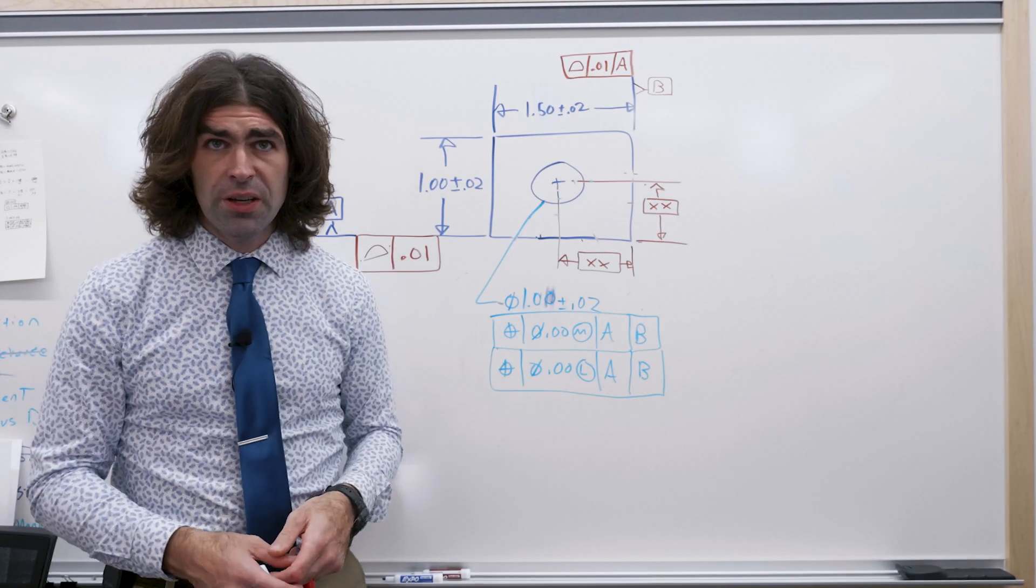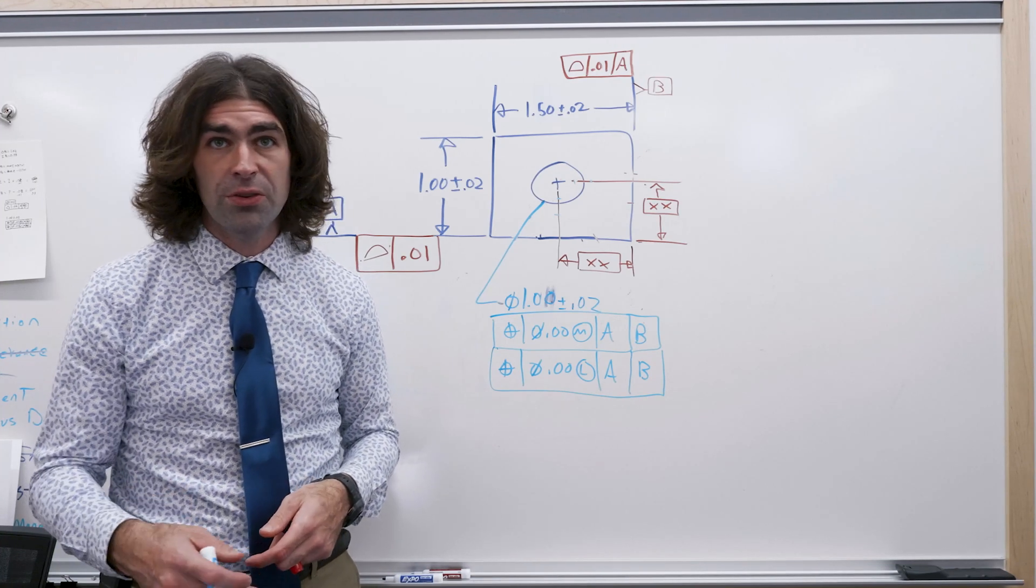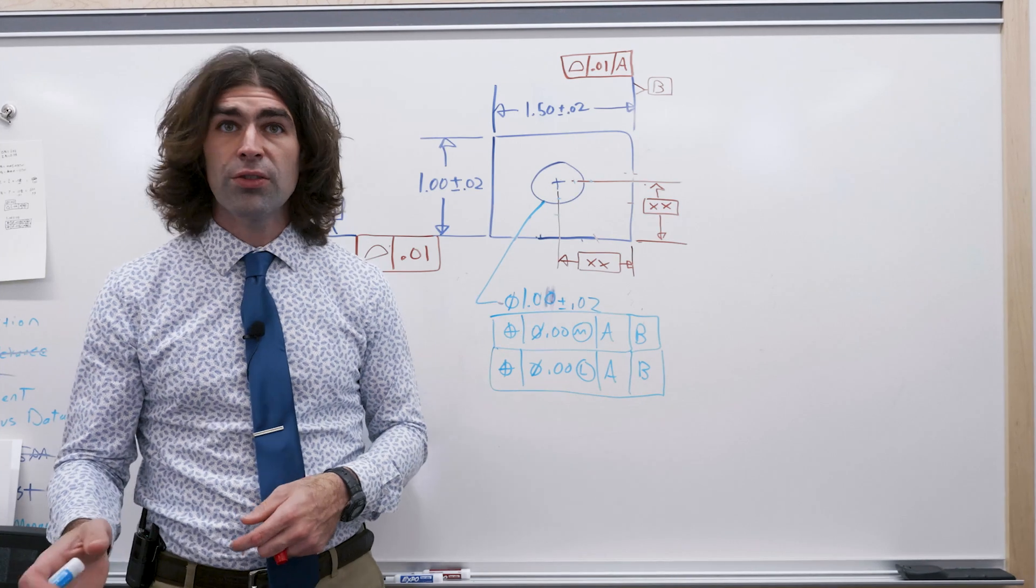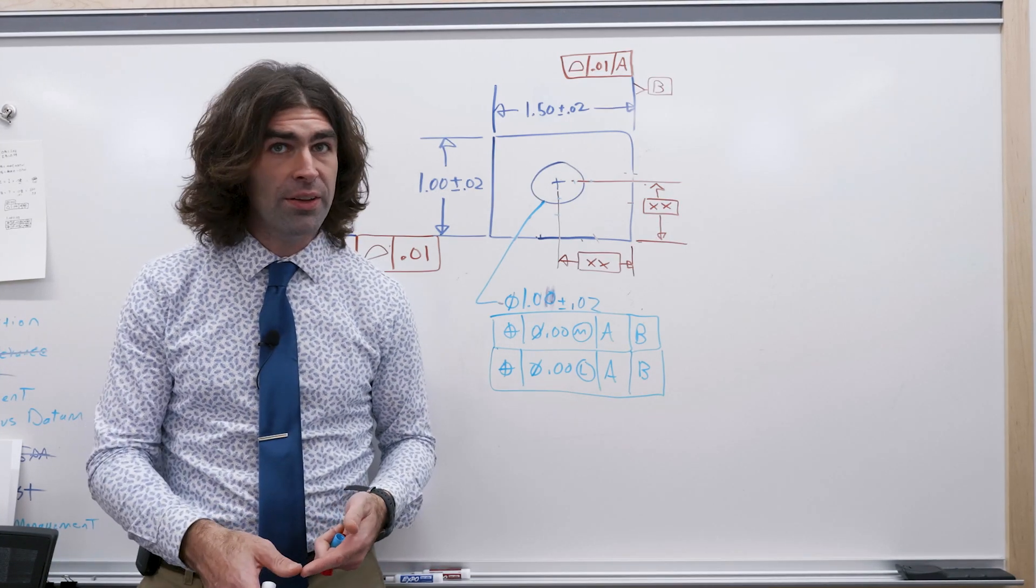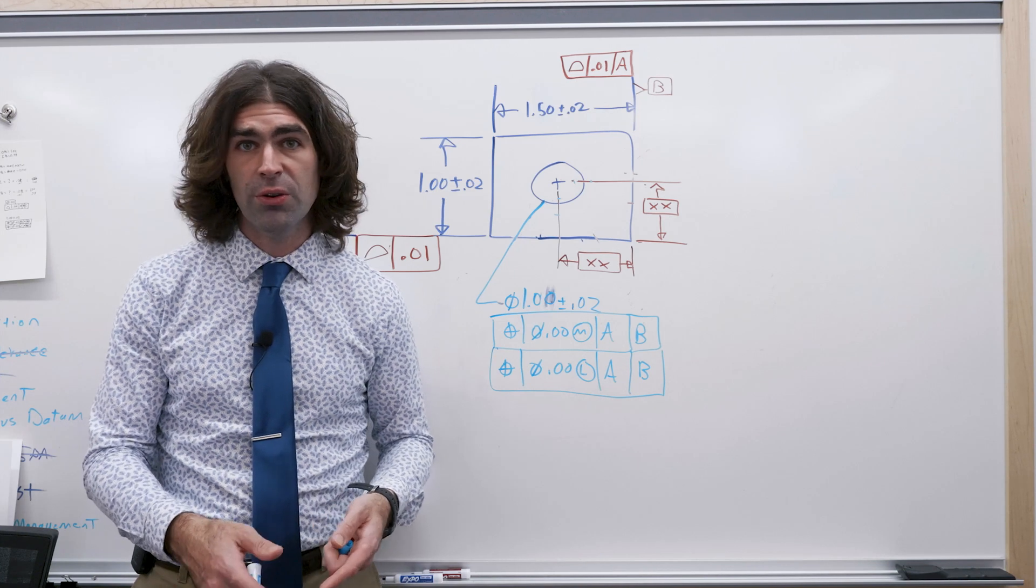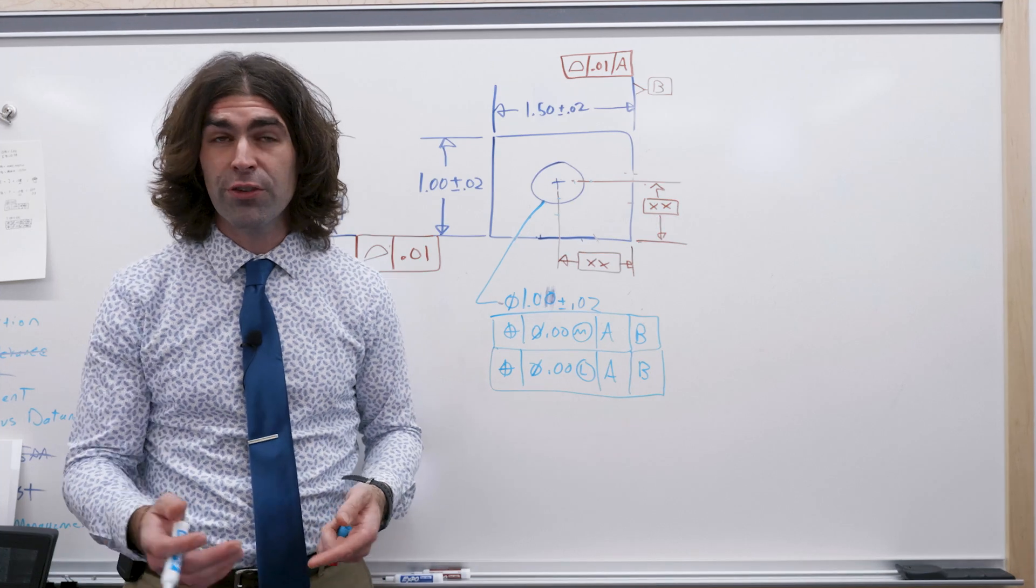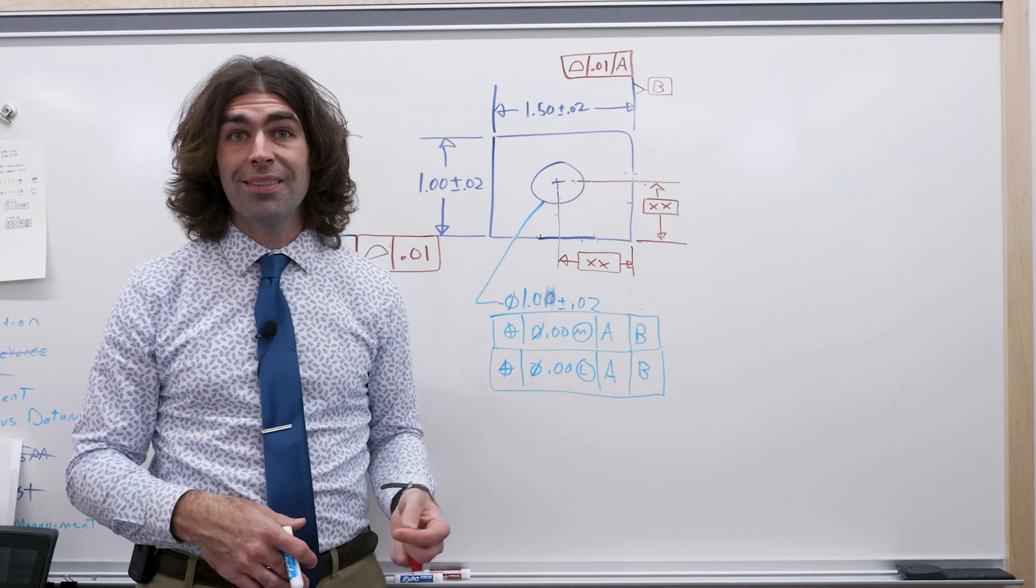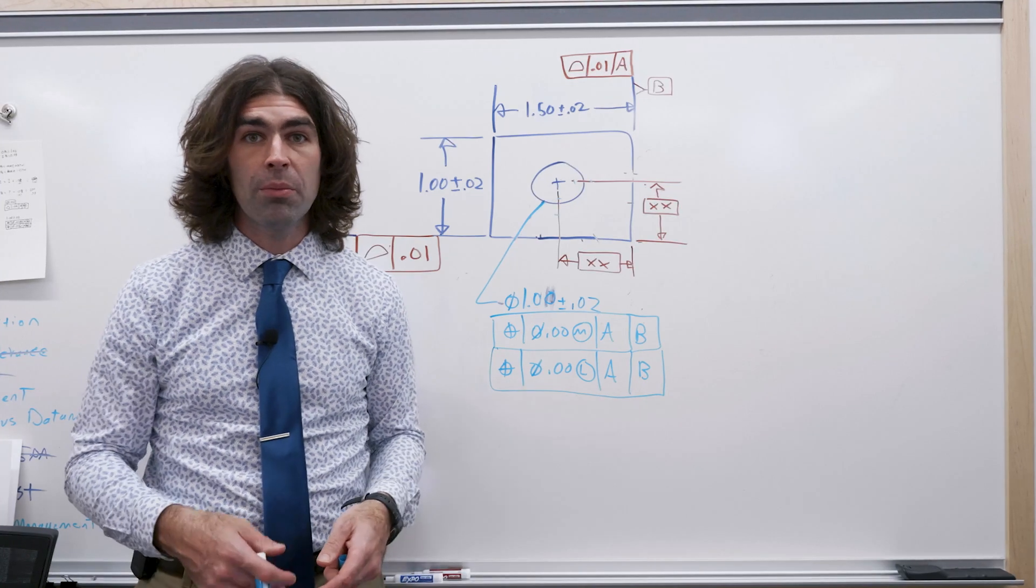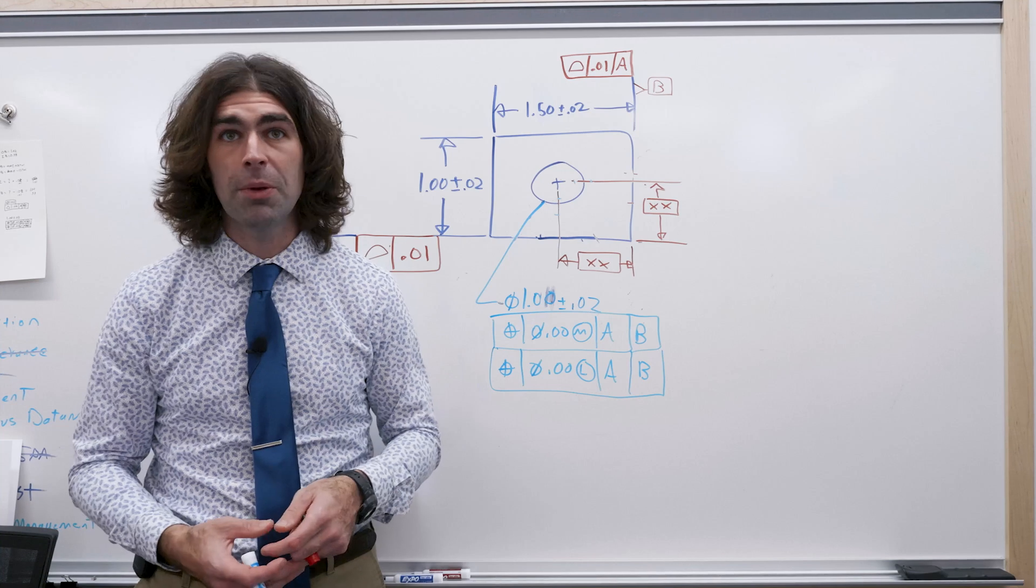So that's it for this video. Maybe in another video I'll talk about runout and circularity and cylindricity. They can also to certain degrees be used with profile. Runout isn't the same thing as profile of a surface or a line, and circularity can be used with profile of a surface, profile of a line a little bit. And in my opinion, cylindricity could be replaced by profile of a surface with no datum reference. So just a sneak peek of next video.